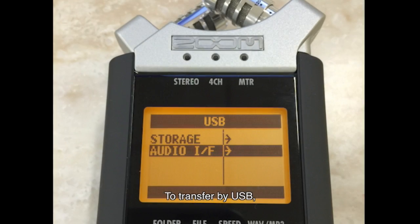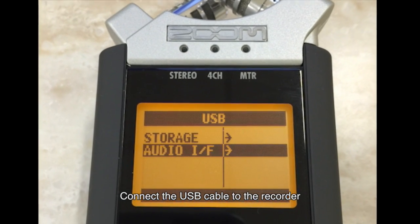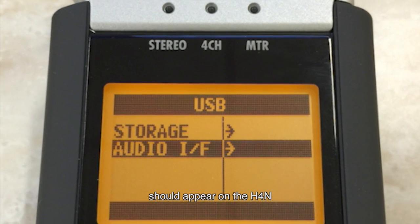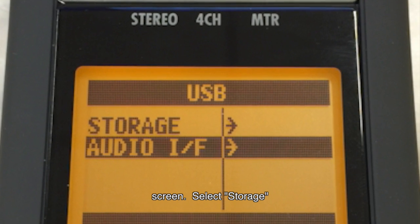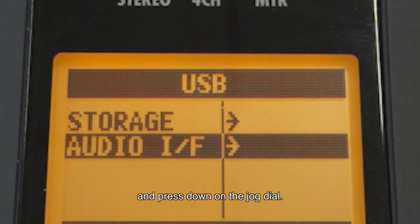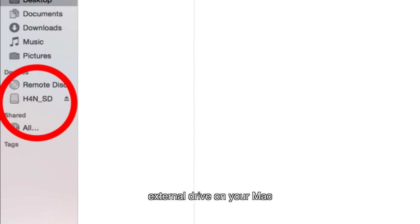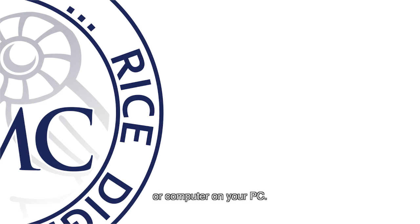To transfer by USB, connect the USB cable to the recorder and your computer. USB select should appear on the H4 end screen. Select storage and press down on the jog dial. The recorder will now appear as another external drive in your Finder on your Mac or computer on your PC.